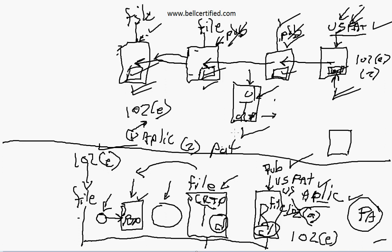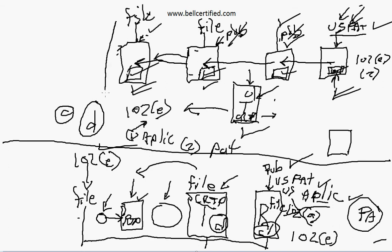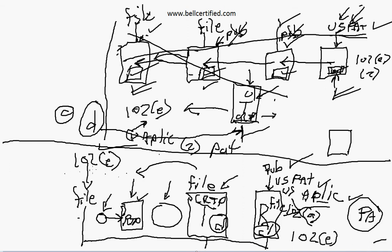Now, the same rules apply for this target patent — it can still try to prove earlier invention. This is just a constructive reduction to practice. If it can prove a conception here and can prove an act of diligence beginning before this filing date, and then continuing until its constructive reduction to practice, then this whole chain is not prior art. But if it can't prove that — if it can't prove a reduction to practice or prove one of those two things before the prior art event date, which is this filing date — then this family of applications is prior art. And that's the idea of 102E.